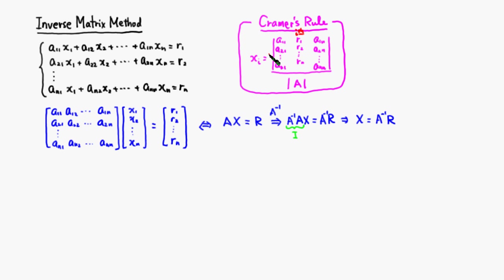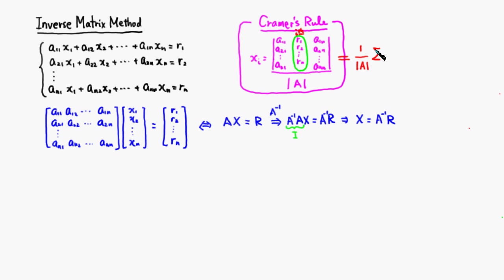Writing Cramer's rule in summation form: xᵢ equals 1 over det(A), times the determinant of the matrix with the ith column replaced by the right-hand side. Expanding along the ith column, this becomes a summation where k goes from 1 to n.